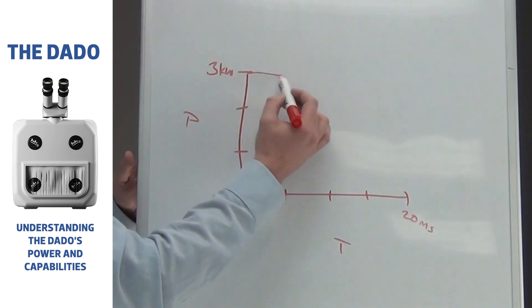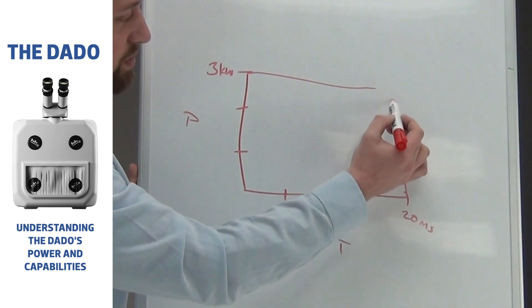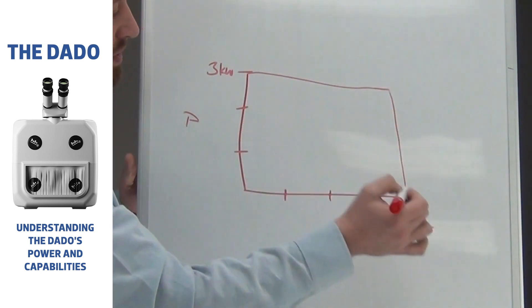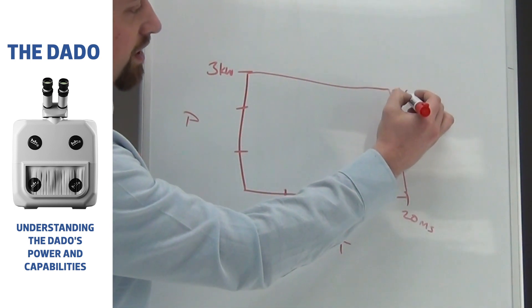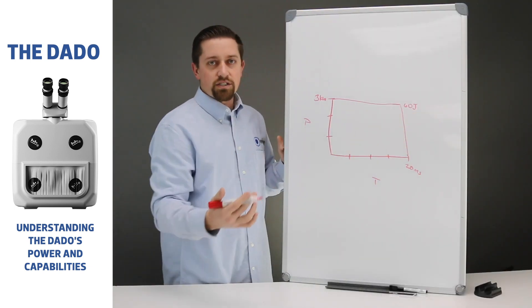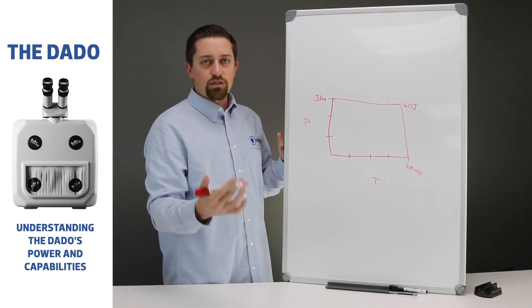So if we work these two together, 3 kilowatts sustained for 20 milliseconds, do the math 3 times 20, that's how you get 60 joules of energy when you make a weld on the 60 joule machine.